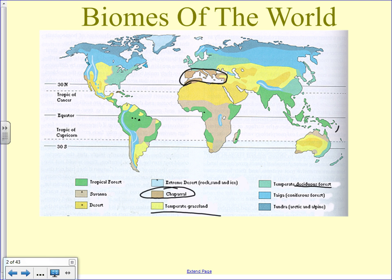Temperate deciduous forest — deciduous means the trees lose their leaves in the fall. Coniferous means they have needles and typically don't lose them; they also make cones to reproduce, whereas deciduous trees are usually flowering. Much of the eastern United States and south-central Canada is considered deciduous forest — that's where you see maple and similar trees. Much of Europe was at one time temperate deciduous forest, but that changed significantly since the Industrial Revolution when trees were used to fuel factories and build houses, leading to a lot of deforestation.